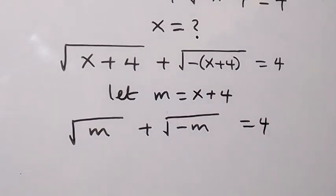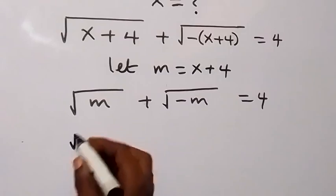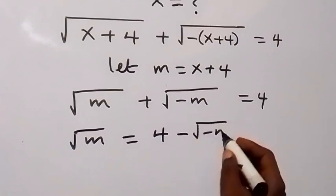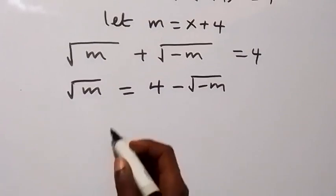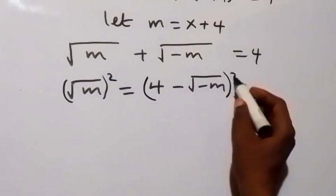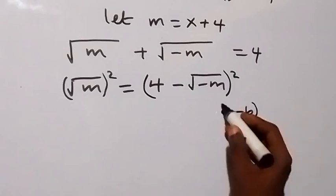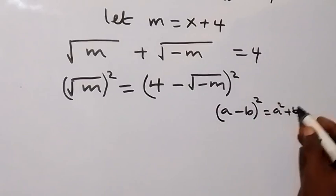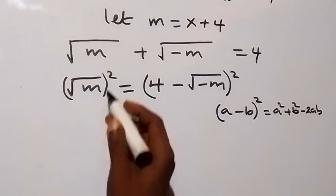Let's take √(-m) to the other side, so we have √m = 4 - √(-m). From here we square both sides. The expansion on the right follows the (a - b)² = a² - 2ab + b² identity.